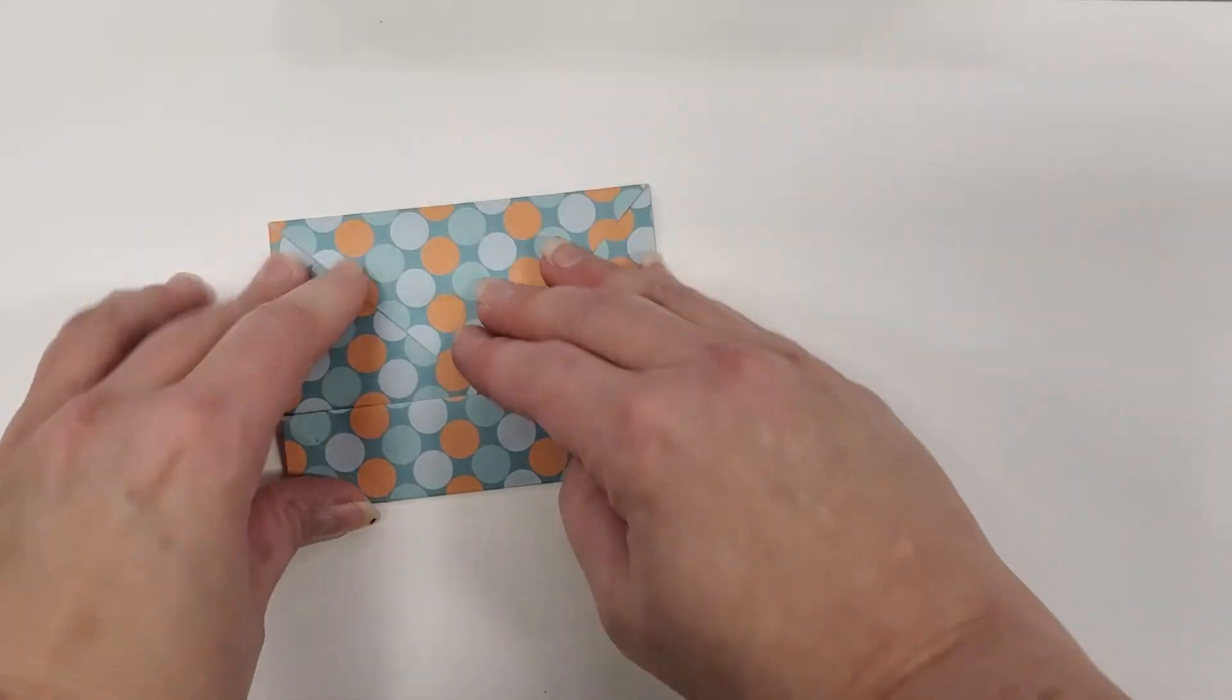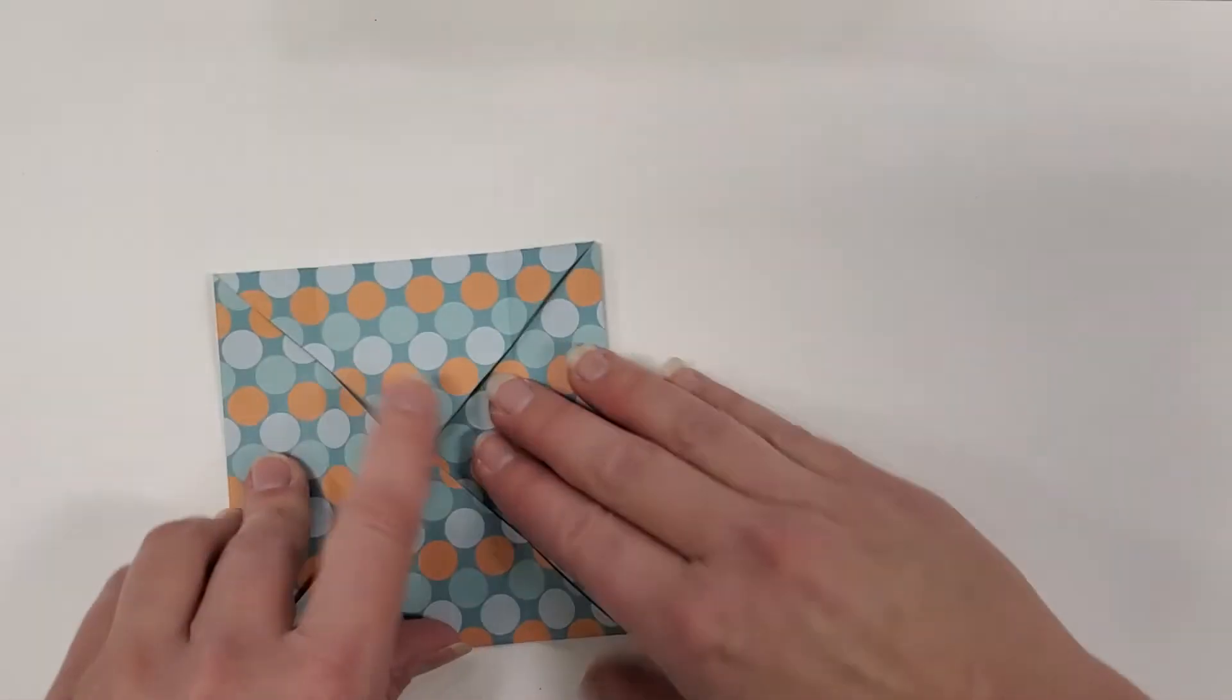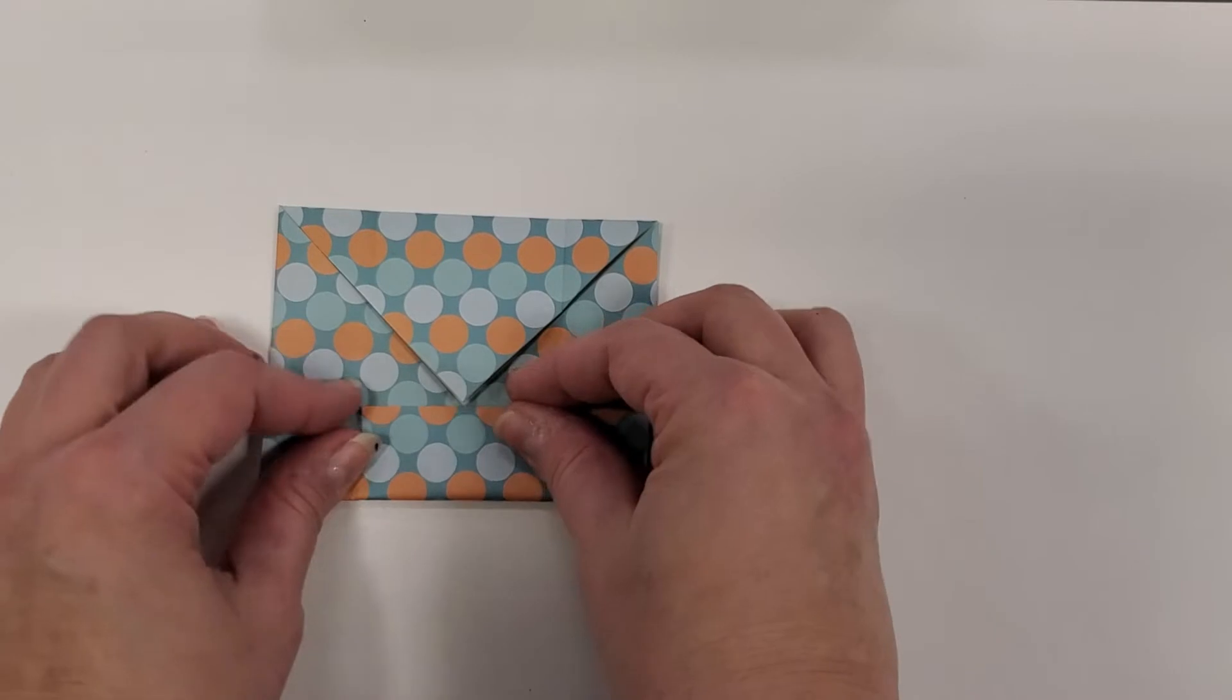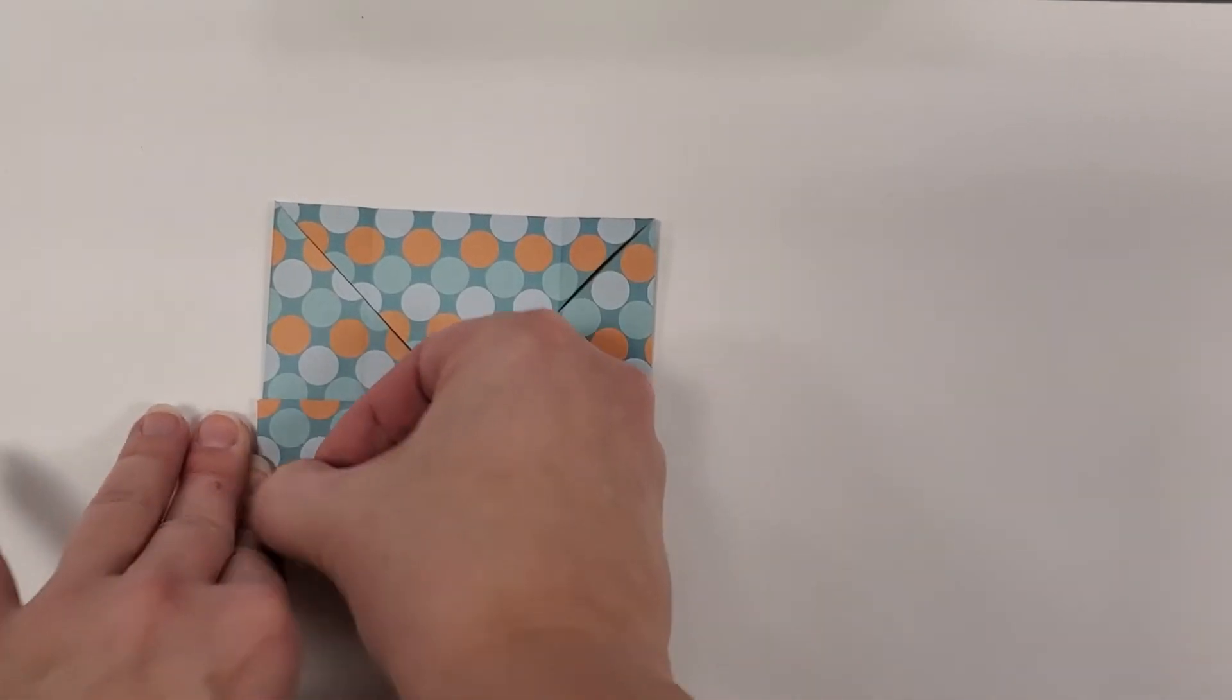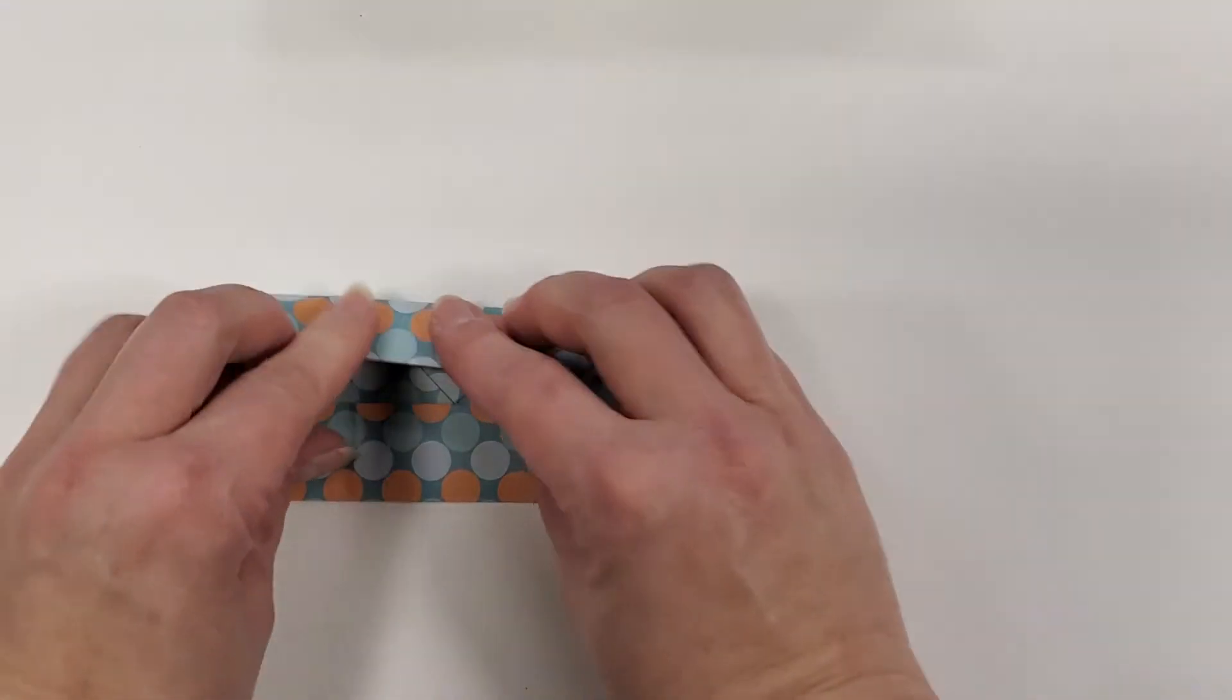I'm going to open those up, rotate my model and I'm going to take the new outside edges and fold them to the center. So I'm kind of making a square in the middle of my paper with my creases.